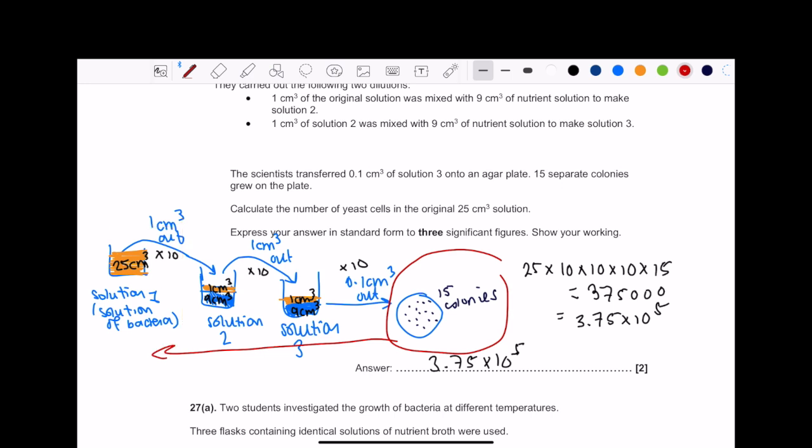We work backwards. We start with our 15. Remember those times 10 dilution factors? They come in handy. So 15 colonies times that by 1000. Because we want to find the original number in the 25 cm³, we times it by 25 and get 375,000. In standard form to three significant figures, that's 3.75 times 10 to power 5.